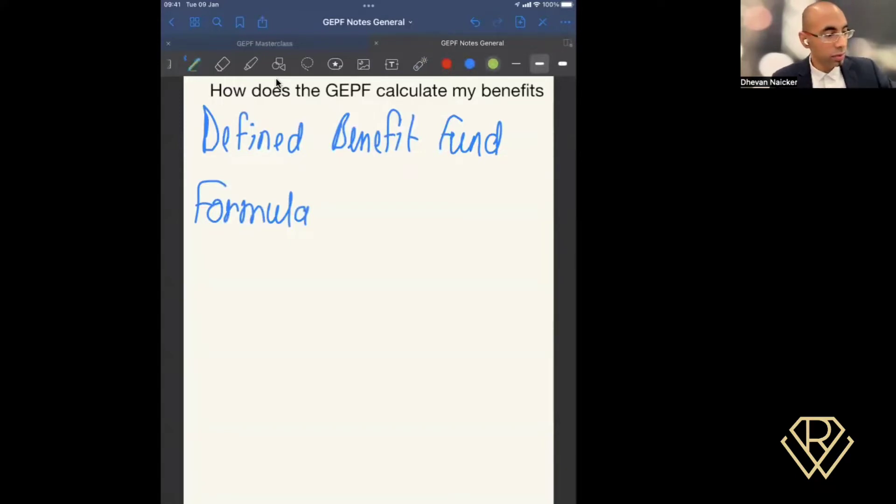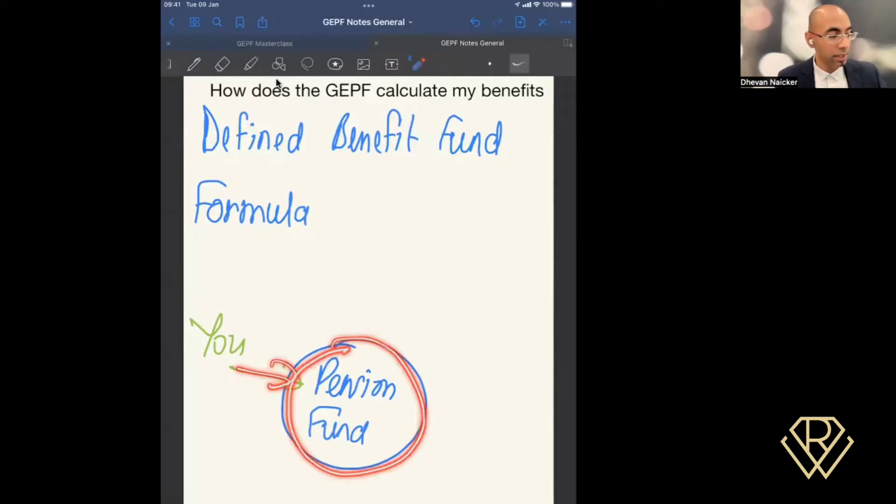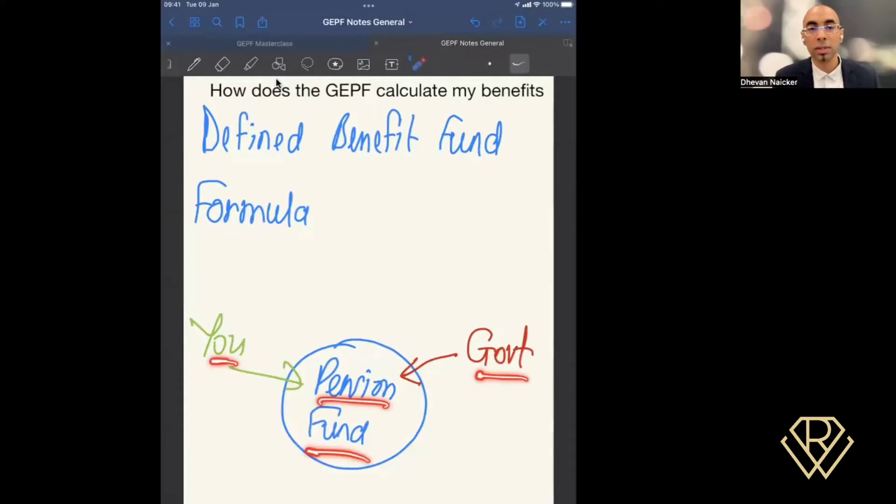Every month you are making a contribution. So let's use this as your pool. And we'll say that you are making a contribution toward it. So this is you contributing. And we'll say this is your pension fund. So a portion of your salary is being deducted and that portion is going into this pool here, which is your pension fund, your savings. In addition to that, government themselves is also deducting a portion and investing it into your pool. So you are contributing a portion of your salary towards your pension fund. Government is contributing a portion of your salary towards the pension fund, and it's all being saved inside one place.